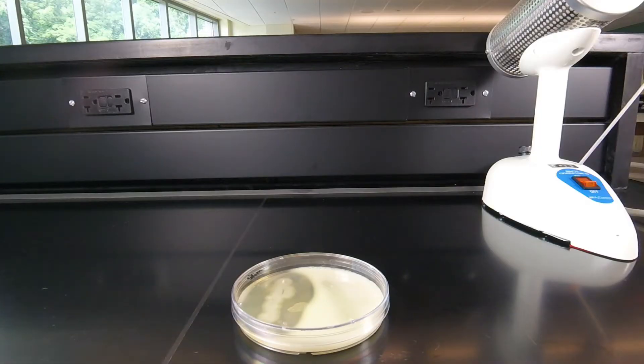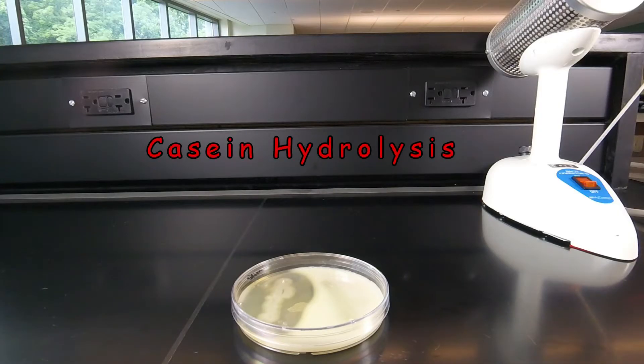One of the exercises in today's lab is looking at protein hydrolysis by bacterial enzymes. In this case, we're going to look for hydrolysis of a protein called casein, which is the principal protein found in milk.